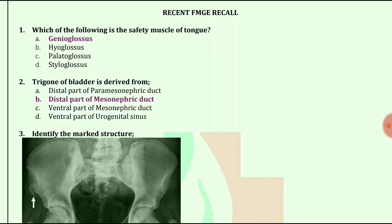Question number one: Which of the following is the safety muscle of the tongue? Answer is genioglossus.